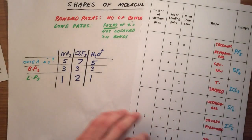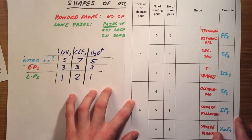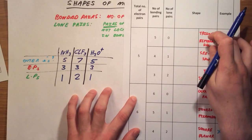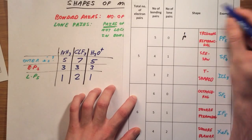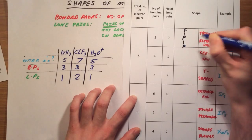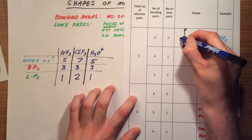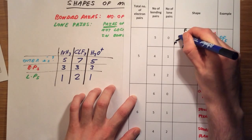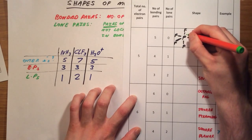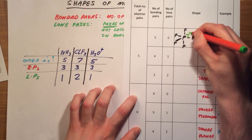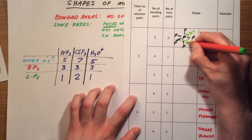If we increase to five bonded pairs, we get some slightly different and unusual shapes. With 5 bonded pairs and 0 lone pairs, we get a shape called trigonal bipyramidal. For PF5, we have our central phosphorus with a fluorine at the top, a fluorine at the bottom, and the remaining fluorines arranged in a trigonal planar fashion about the central point, similar to BF3. There are two different bond angles: 90 degrees between the top/bottom fluorines and the central ones, and 120 degrees between the central fluorines.